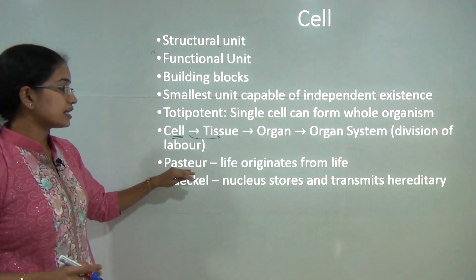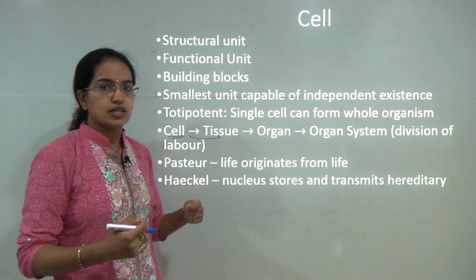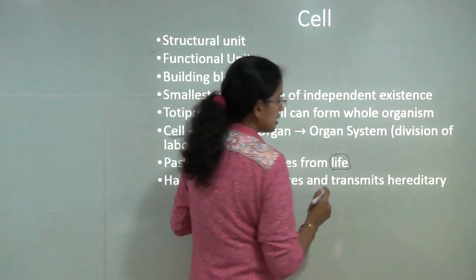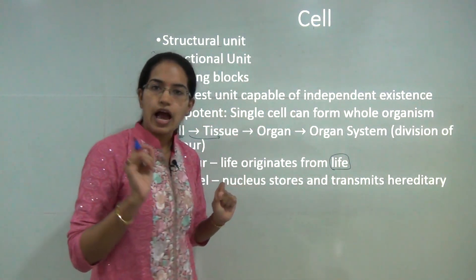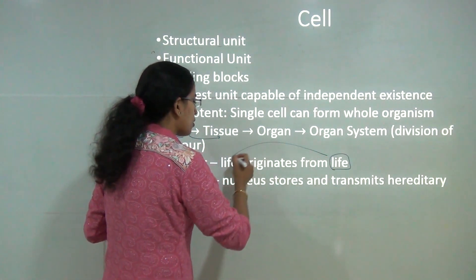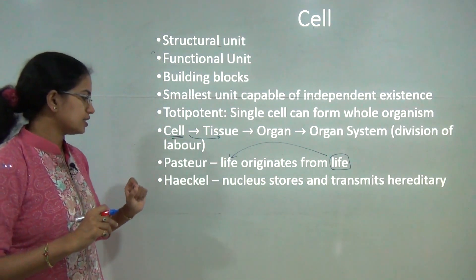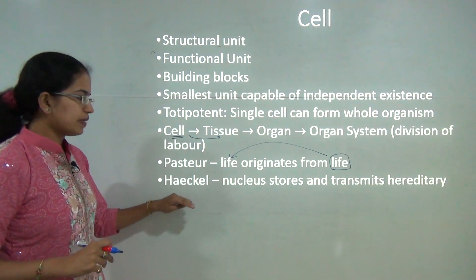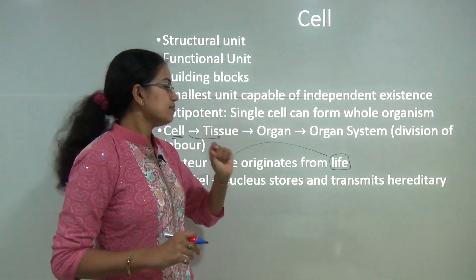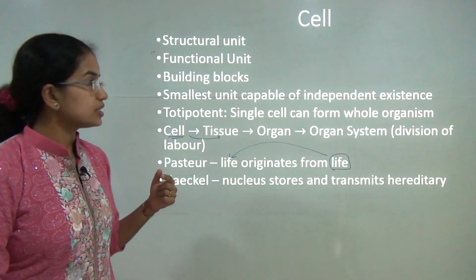Pasteur explained that life originates from life — if a life exists prior, that means a cell existed, and new cells would be formed only from those original cells. Heckel explained that the nucleus is the key of a cell, which stores and transmits hereditary information.